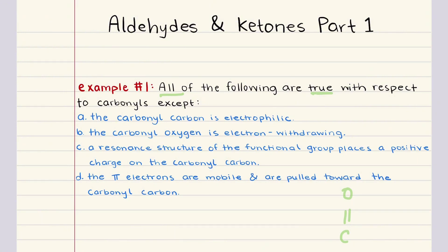Option A states that the carbonyl carbon is electrophilic. This is correct because the carbon in the carbonyl group is partially positive due to the electronegativity difference between carbon and oxygen. Oxygen pulls the electron density towards itself, leaving the carbon electron deficient and susceptible to nucleophilic attack. So A is true.